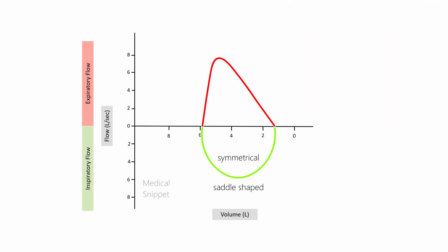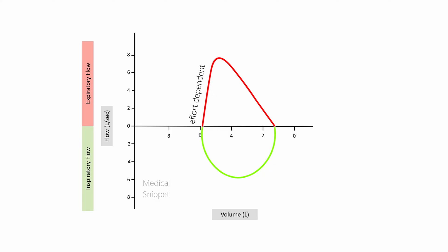The expiratory curve has an initial rapid rise phase. The peak of the curve denotes the peak expiratory flow rate, followed by a linear fall until the patient exhales towards the residual volume. The initial rapid expiratory phase is effort dependent, and the latter linear phase is effort independent — it depends on the elastic recoil of the lungs and airway resistance, not on expiratory effort.